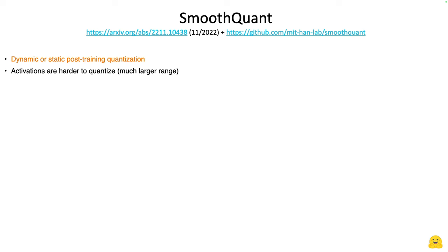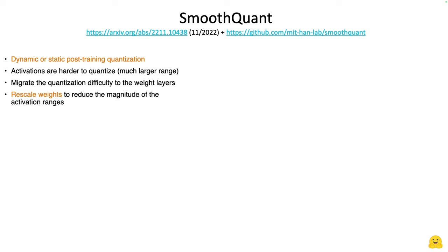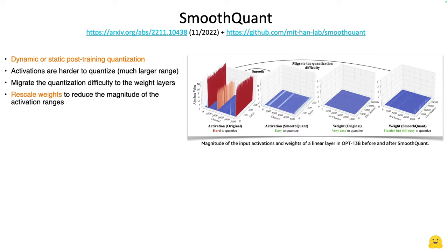So to solve that problem, SmoothQuant introduces a pretty interesting idea: can't we migrate some of the quantization difficulty to the weight layers? Instead of trying hard to quantize huge ranges of activations, can we tweak the weights so that we reduce that range of activations? That's pretty clever, and this is exactly what they do.